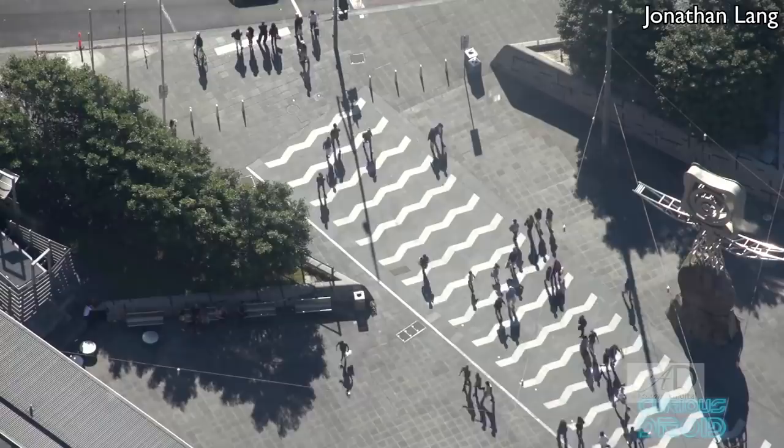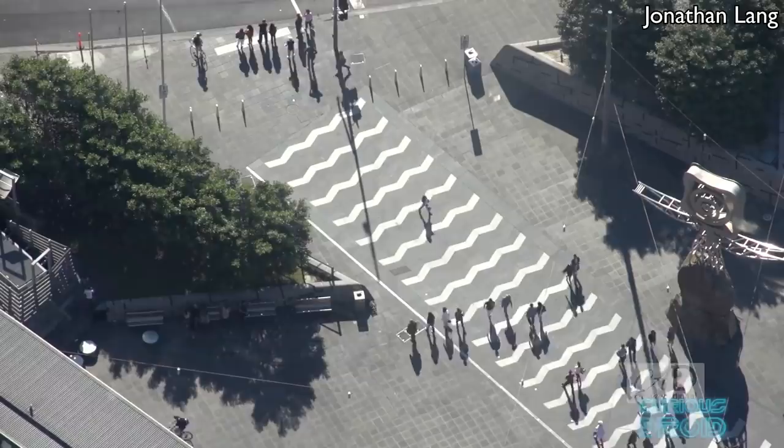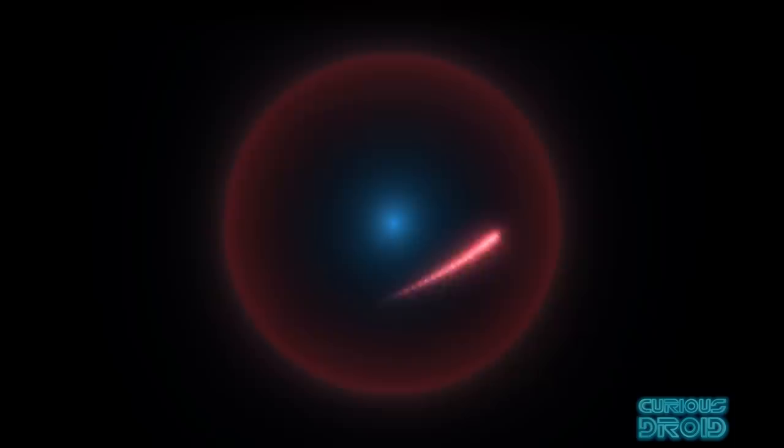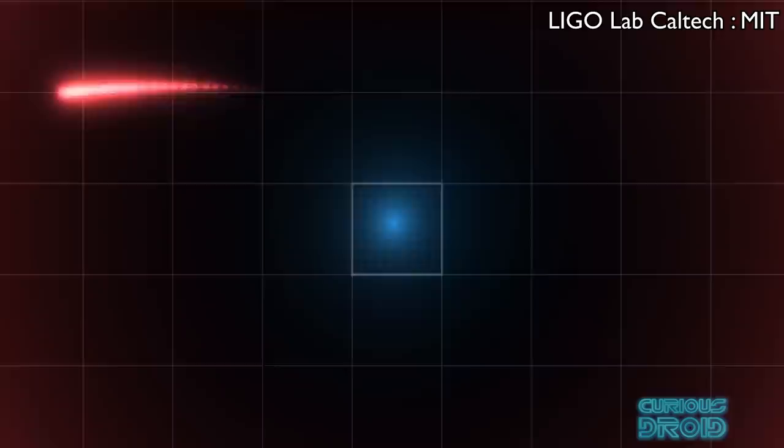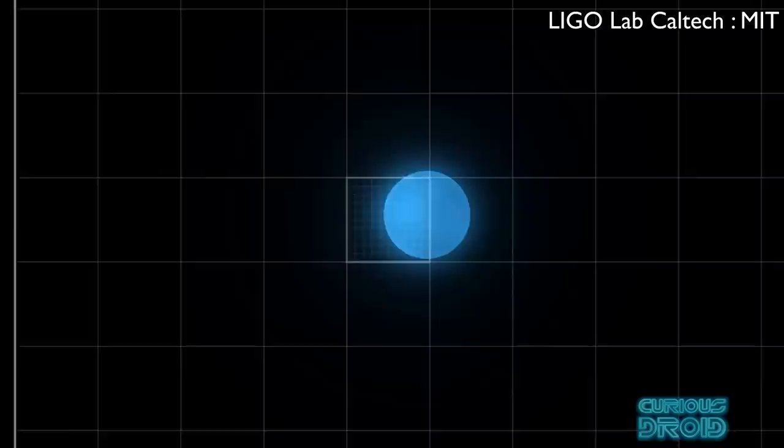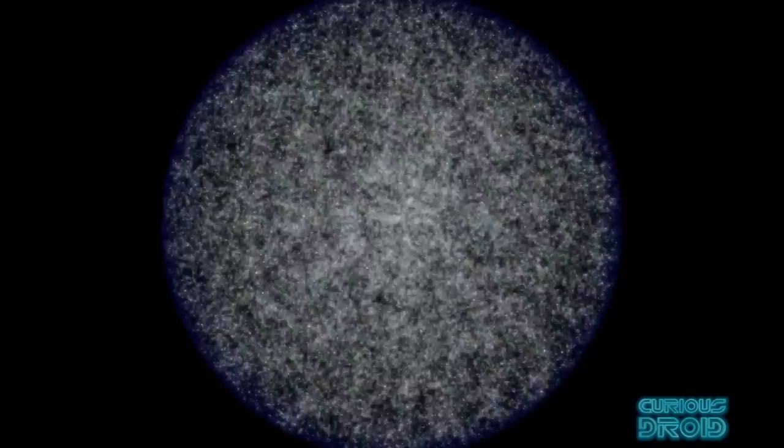And as large as the scale of space is, it's only half the story. We exist somewhere near the middle between the very large and the very small where there is an even greater range of scale going down to the very smallest unit of measurement we can currently practically use, a distance so small that if a meter were scaled down to that size, the entire observable universe would be just a bit larger than an atom.